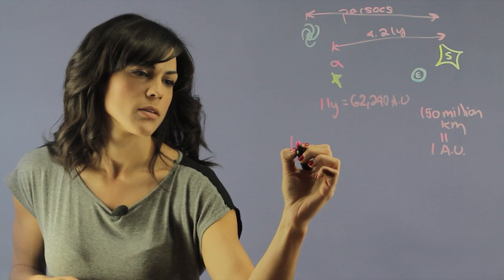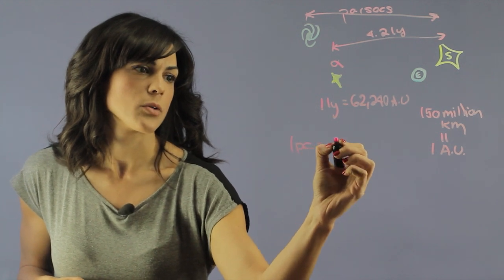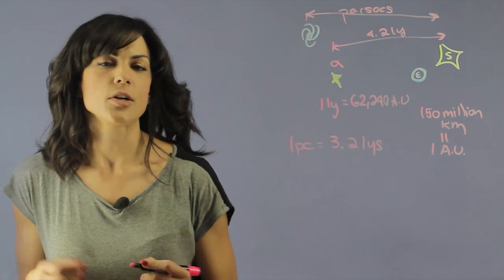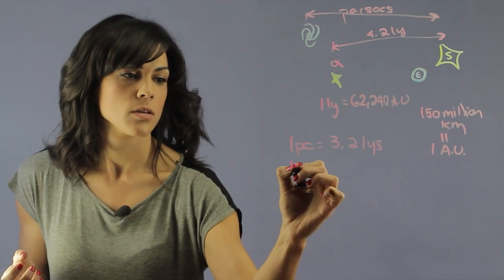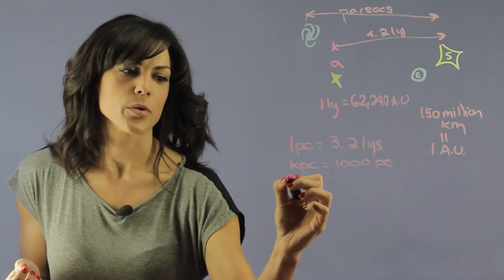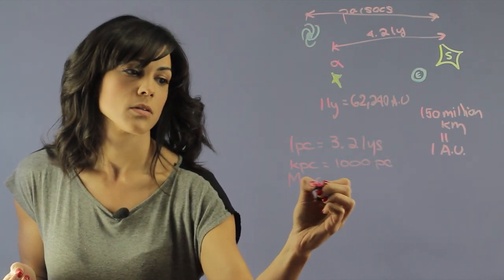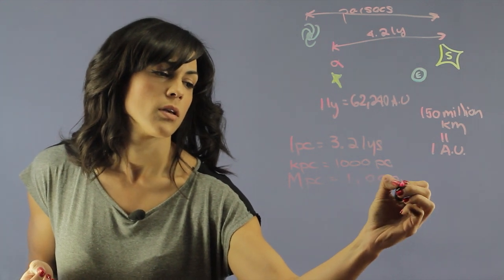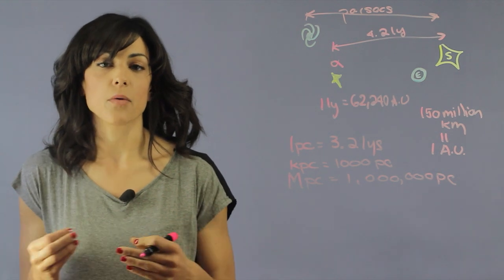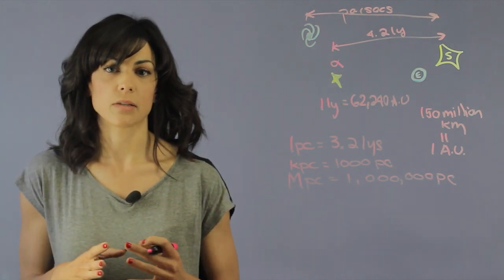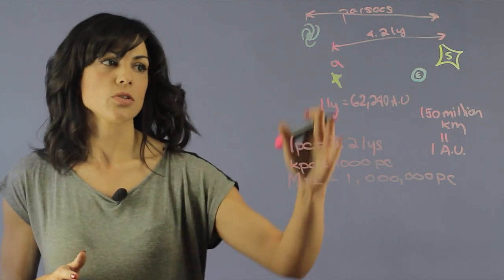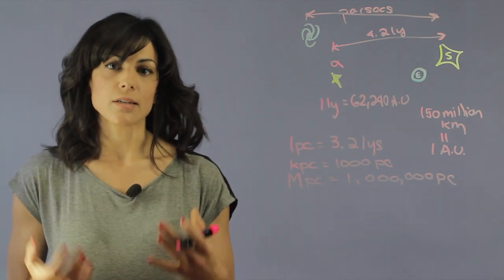Now one parsec is equal to 3.2 light years and then generally we use kiloparsecs which is 1,000 parsecs. And then we use megaparsecs which is 1,000,000 parsecs. So generally speaking in cosmology now when we're talking about outside of our galaxy, when we're talking about really distant objects, we use the terms of megaparsecs. So this is sort of how we kind of scale our units in distance.